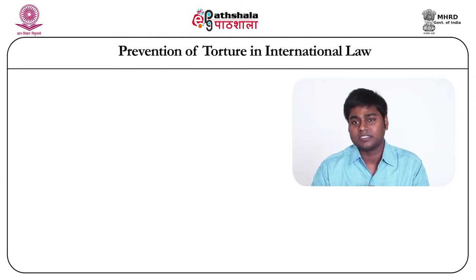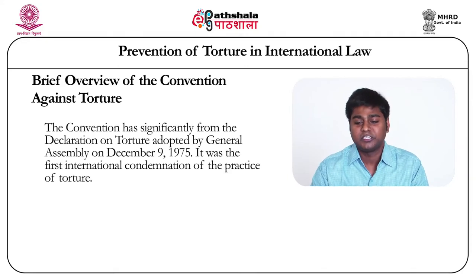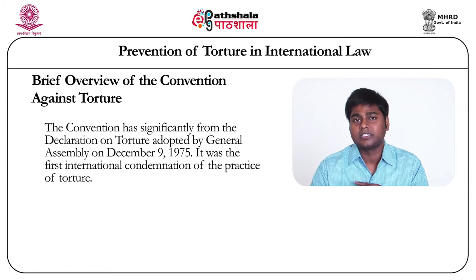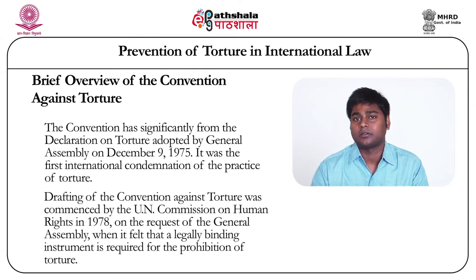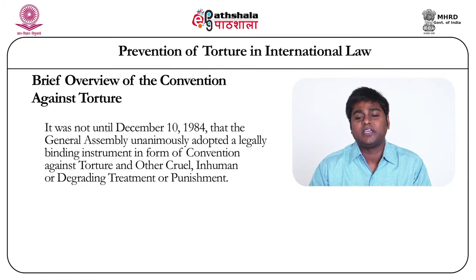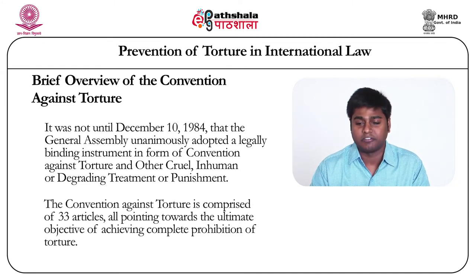We now come to the important provisions of the Torture Convention. The convention took much from the Declaration on Torture adopted by the General Assembly on December 9, 1975 — the first international condemnation of torture, though not binding. The Torture Convention was finally adopted on December 10, 1984, unanimously by the General Assembly as a legally binding instrument. Its full name is the Convention Against Torture or Other Cruel, Inhuman or Degrading Treatment or Punishment, consisting of 33 articles.